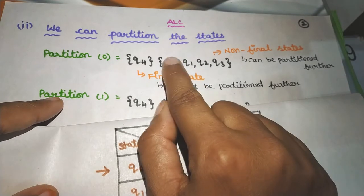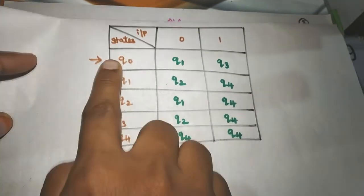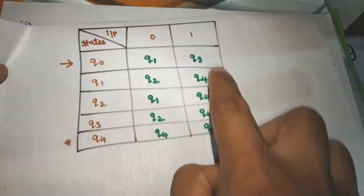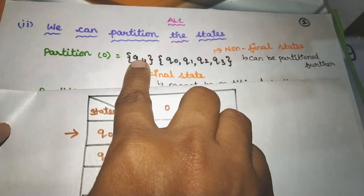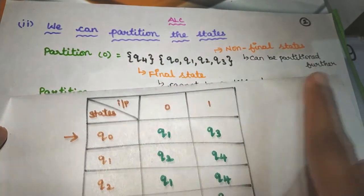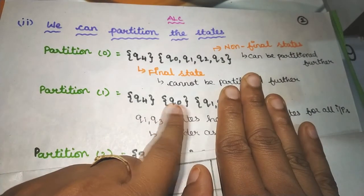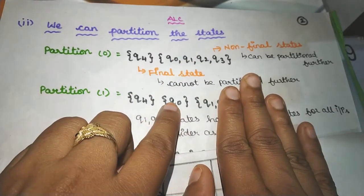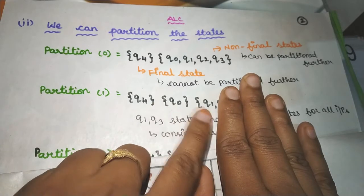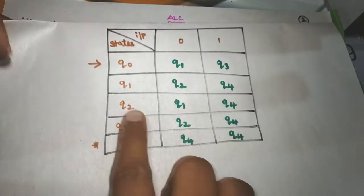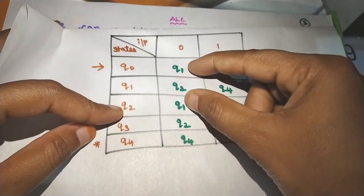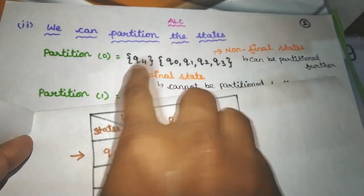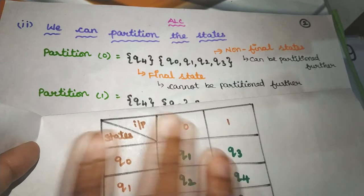Now we compare: Q0 and Q1, Q1 and Q2 — Q1 and Q2 are in one set. Q3 and Q4: Q3 is in one set and Q4 is in another set. So Q0 and Q1 are equal; we can add them to the same set. Q2 is also compared — Q0 and Q1 are equal to the same set, so Q2 and Q0 are also equal to the same state.